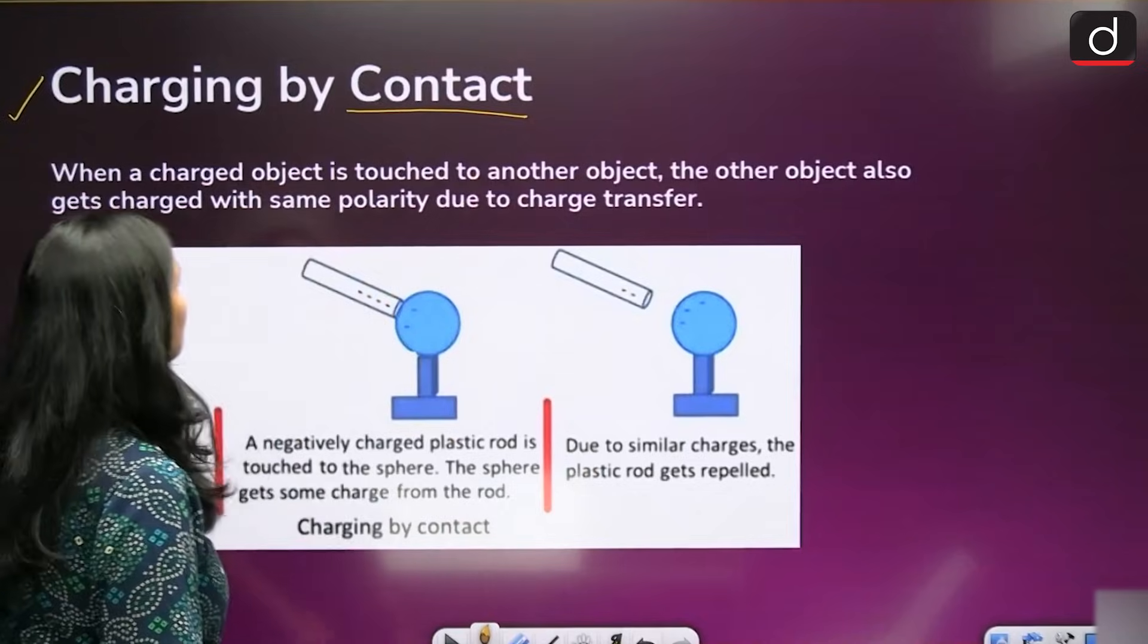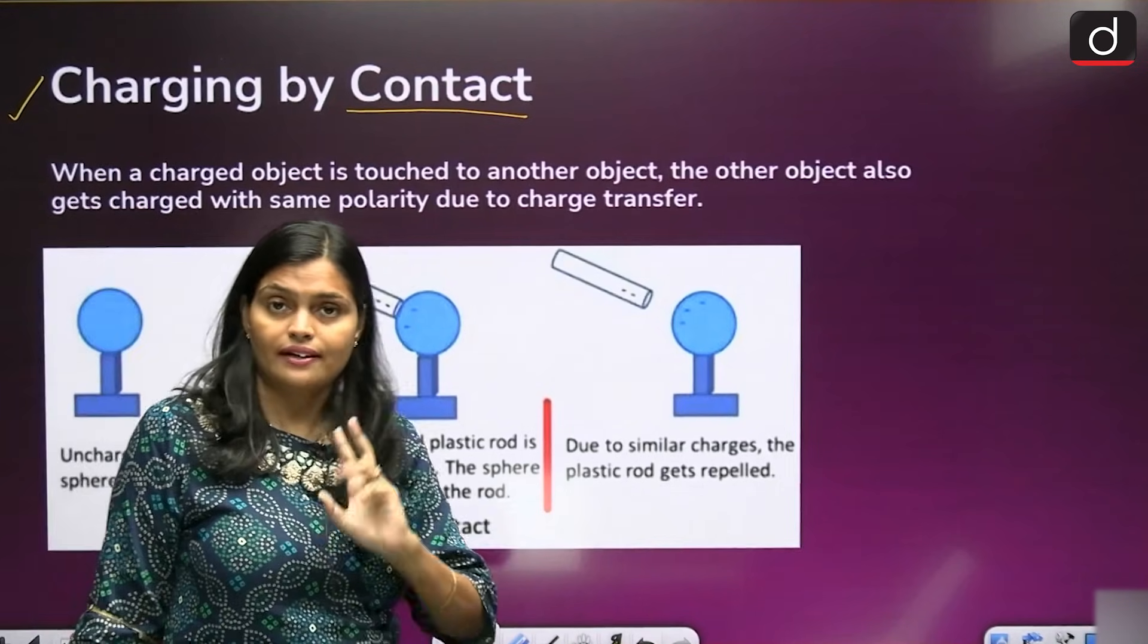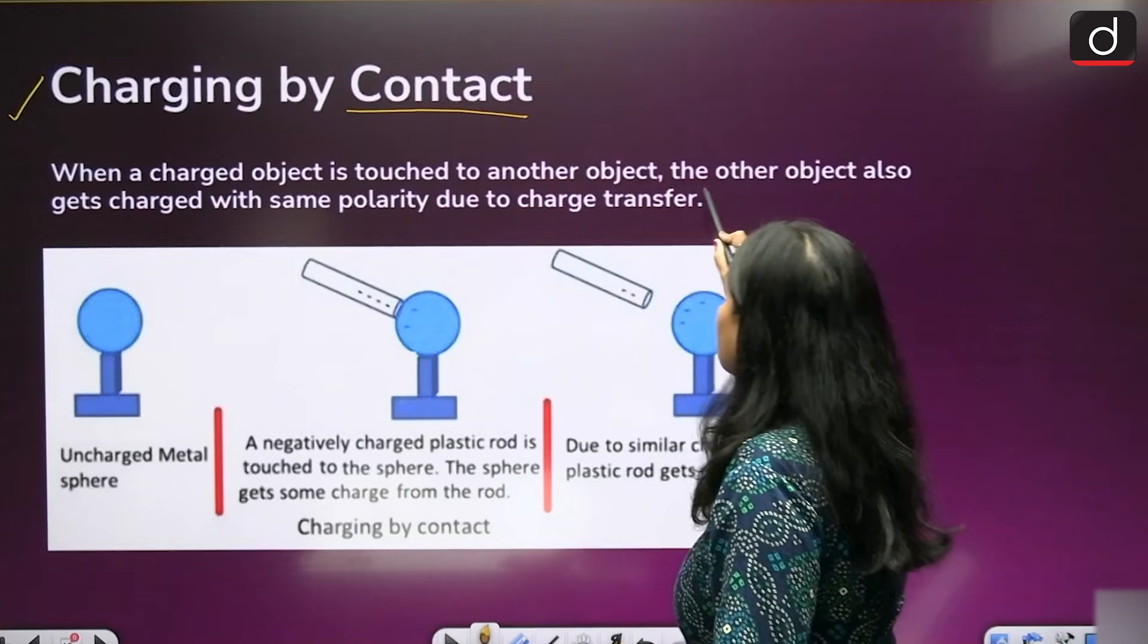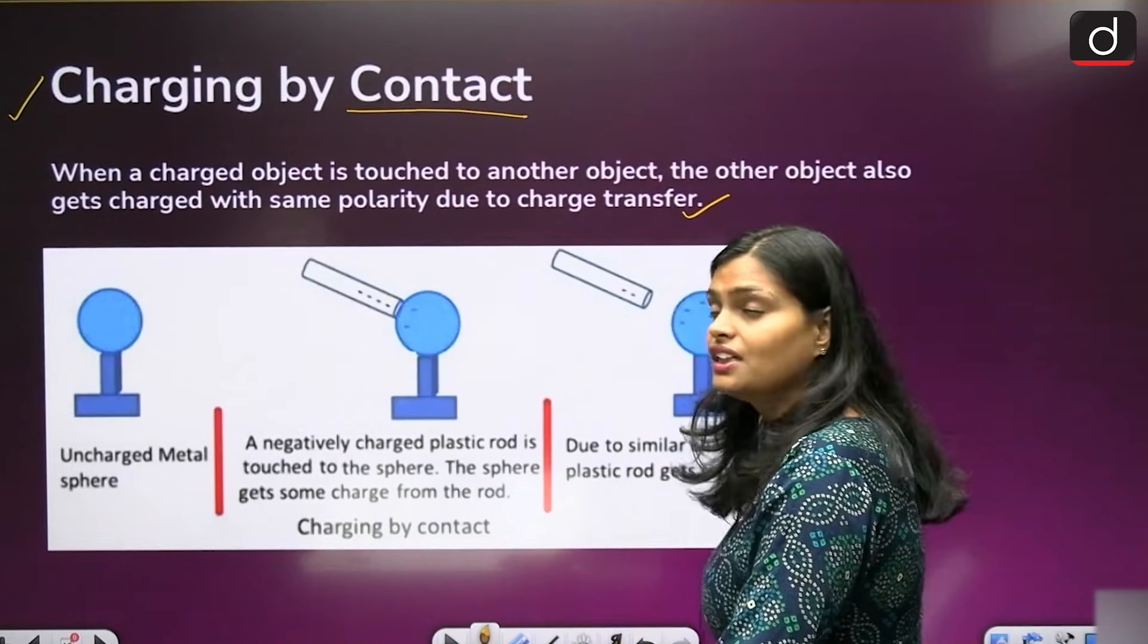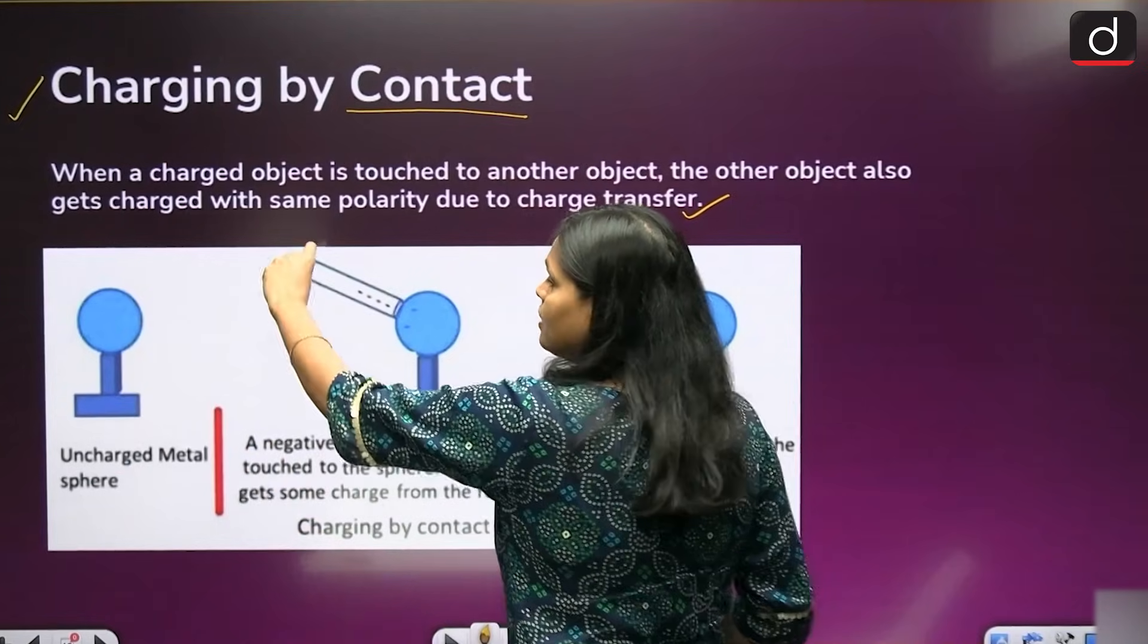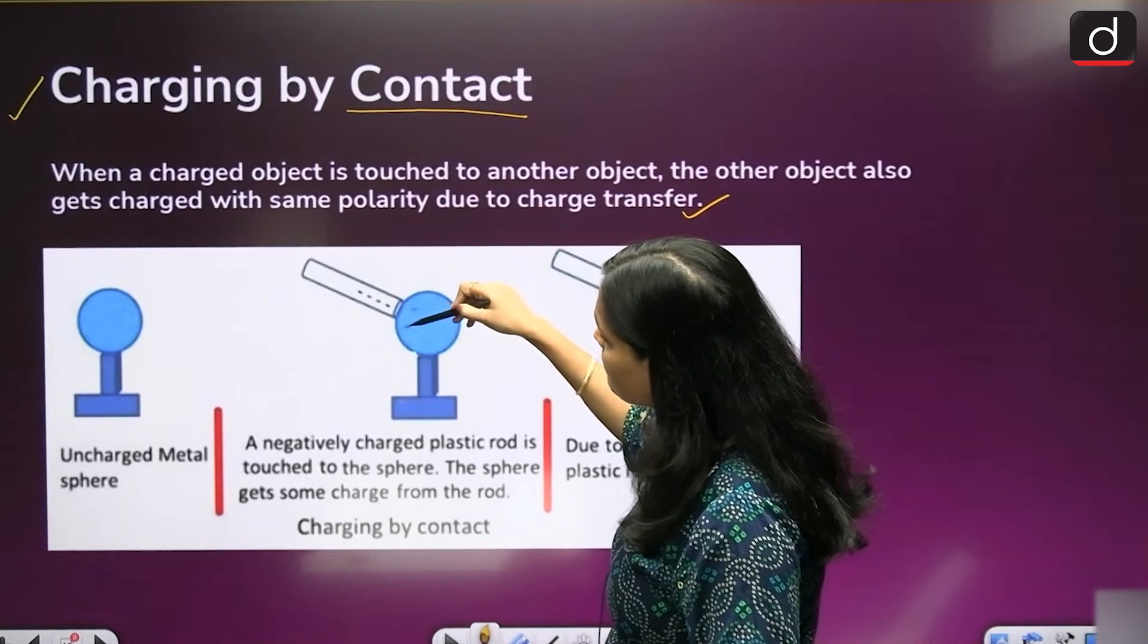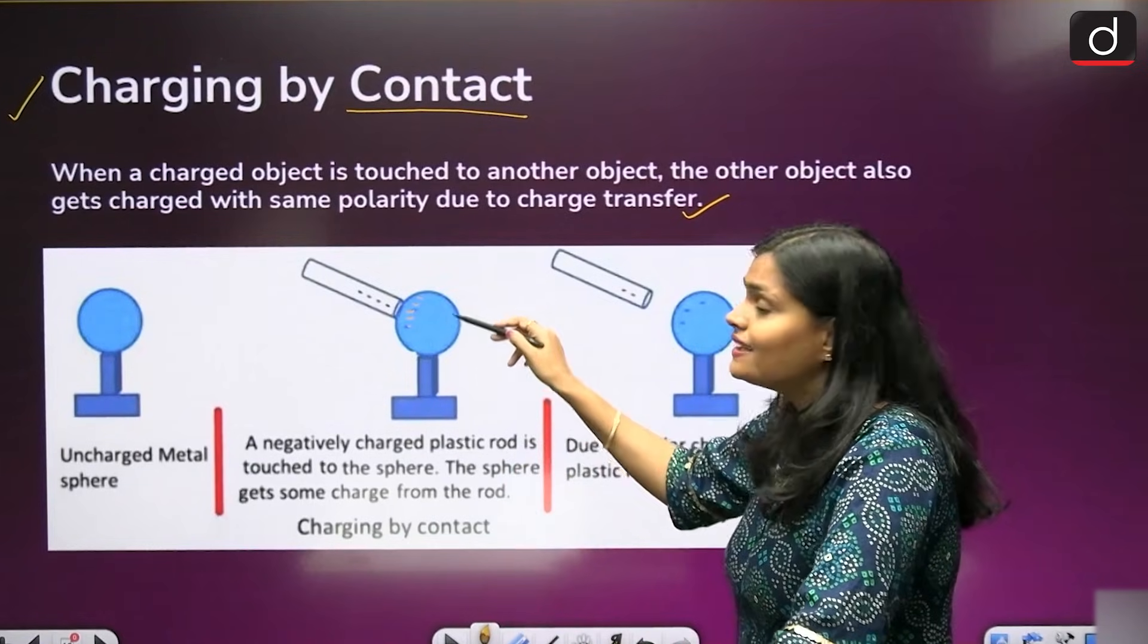Charging by contact. Suppose here you have an uncharged metal sphere. We are not taking the insulator, we are taking a metal only. And this metal sphere is uncharged. When a charged object is touched to another object, the other object also gets charged with same polarity due to the charge transfer. Here you have an uncharged metal sphere. Once you bring a negatively charged plastic rod near the metal sphere and you started touching this rod with this sphere, this sphere gets some negative charges due to this plastic rod. So now this sphere gets electrified.